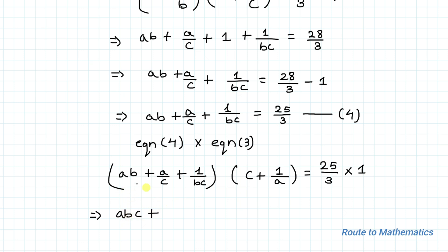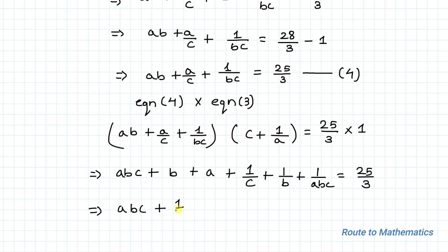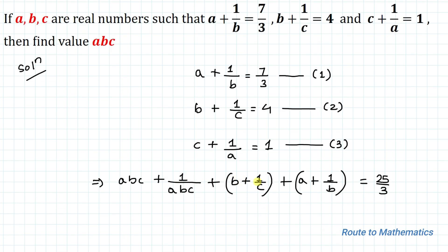Expanding each term: ab·c = abc; ab·(1/a) = b; (a/c)·c = a; (a/c)·(1/a) = 1/c; (1/(bc))·c = 1/b; (1/(bc))·(1/a) = 1/(abc). So we get: abc + b + a + 1/c + 1/b + 1/(abc) = 25/3.